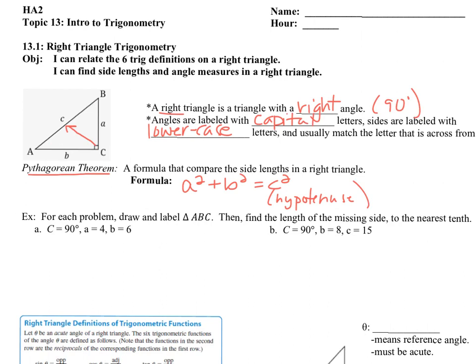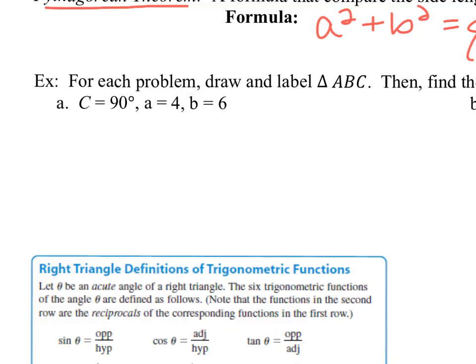For each triangle below, draw and label triangle A, B, C, similar to the one above. Then find the length of the missing side to the nearest tenth. Our first picture has C as 90 degrees, lowercase a as 4, and lowercase b as 6.